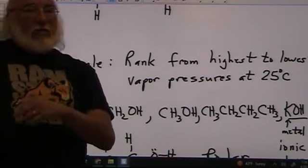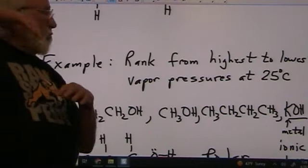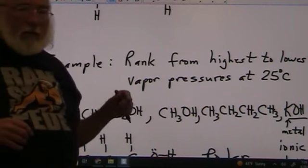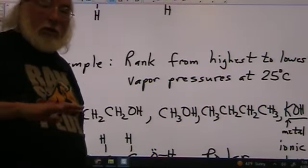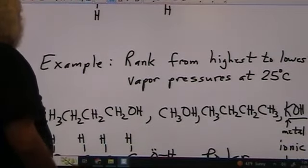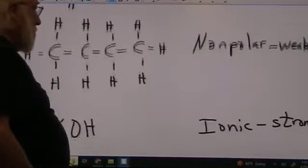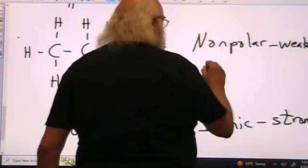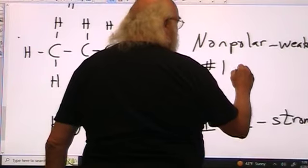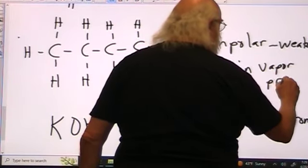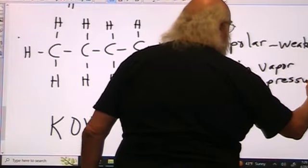So now we are being asked to rank these from highest vapor pressure to lowest vapor pressure. Now, remember, it's an inverse relationship with strength and amount of vapor pressure. So the lowest strength would be the weakest strength. We have the highest vapor pressure. So this is the lowest, or the weakest. So this is number one in vapor pressure.